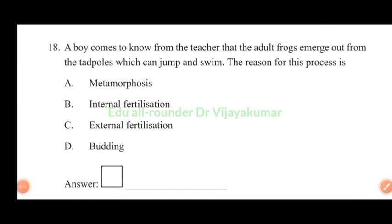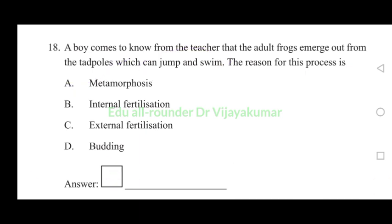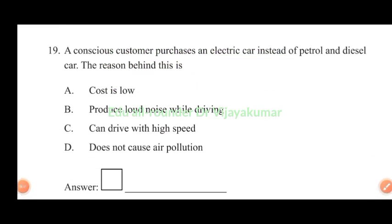A boy comes to know from the teacher that the adult frogs emerge out from the tadpoles which can jump and swim. The reason for this process is metamorphosis. Answer A is the correct answer. Metamorphosis.